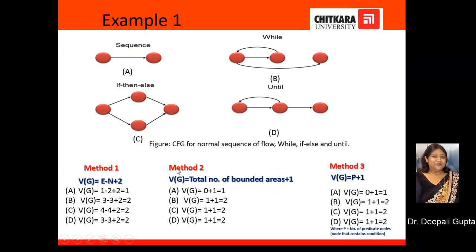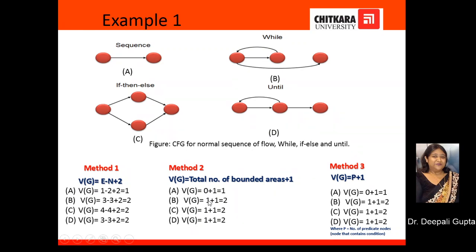Now let us compute the value of V(G) using the second method. The formula is V(G) = total number of bounded areas + 1. In Case A, there is no bounded area, so 0 + 1 = 1. In Case B, there is clearly one bounded area, so 1 + 1 = 2, giving V(G) = 2. In Case C, there is one bounded area, so V(G) = 1 + 1 = 2. In Case D, there is also one bounded area, so 1 + 1 = 2.